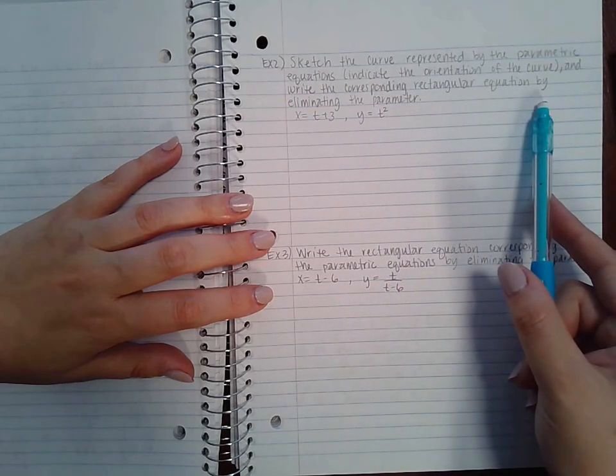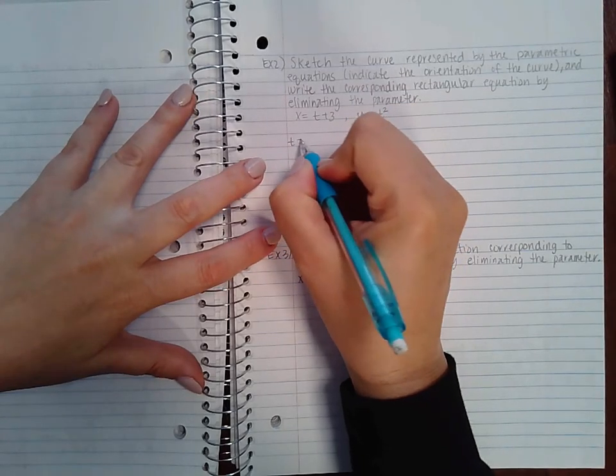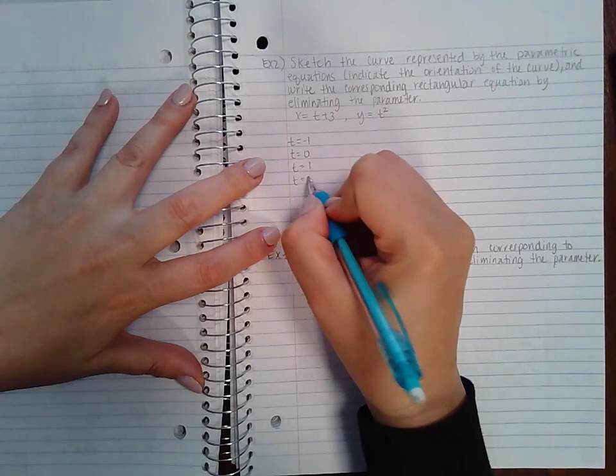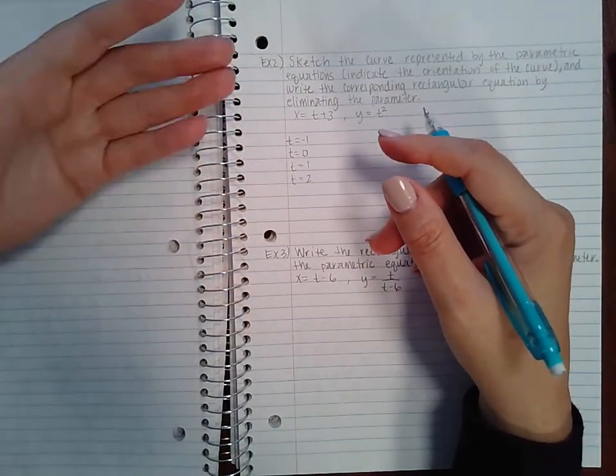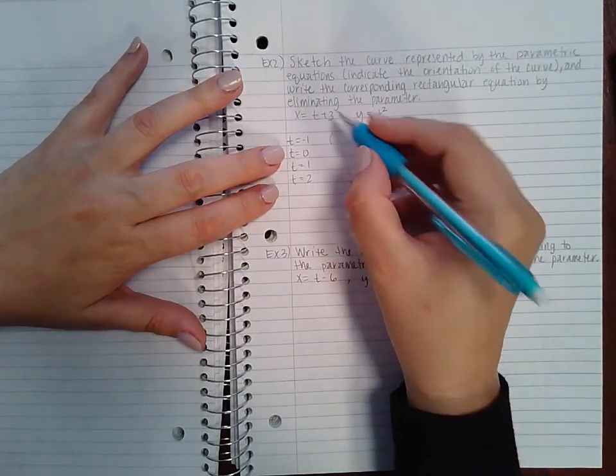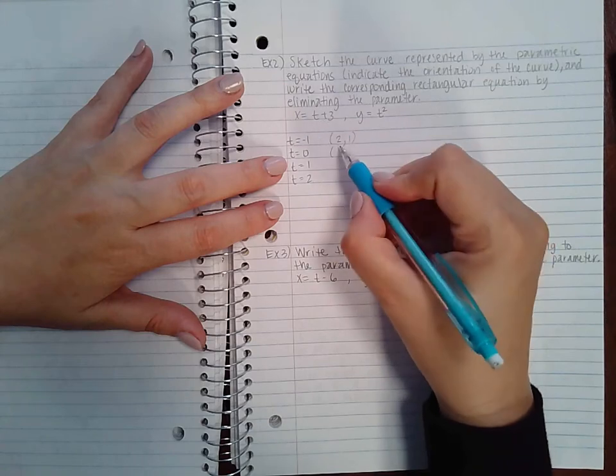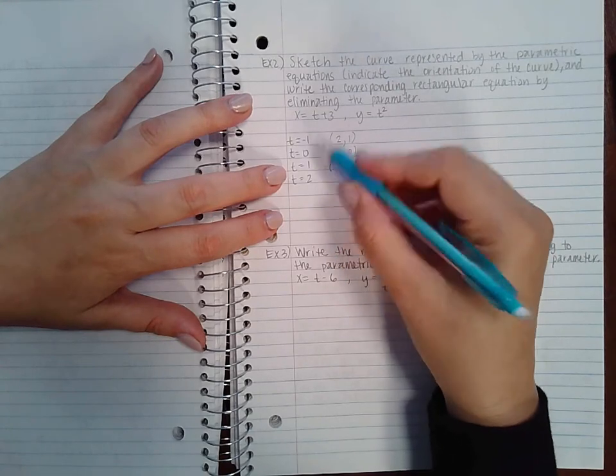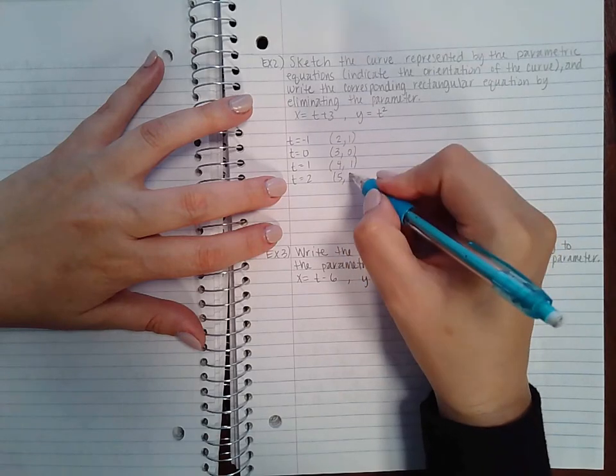Again, they didn't give me any bounds on my parameter, so I'm going to use the same values as I used before: t equal to negative 1, t equal to 0, t equal to 1, and t equal to 2. Depending on what the graph looks like, I may want more negatives and more positives, but I just pick these to start off with. So for x, if I plug in negative 1, I'll get 2 for x and 1 for y. If I plug in 0 for x, I'll get 3; for y, I'll get 0. If I plug in 1 for x, I'll get 4 and 1 for y. 2 for x gives 5, and 2 for y gives 4.